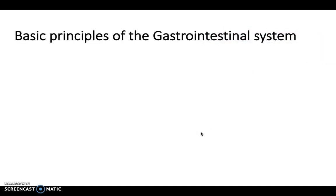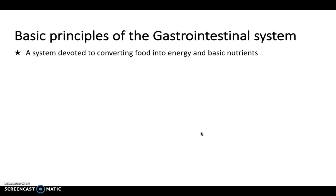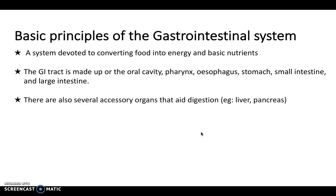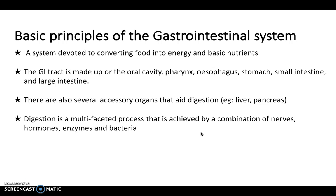Let's look at some of the basic principles of the GI system. The GI system is all about digestion — converting the food we eat into energy and basic nutrients. It's made up from the oral cavity at the top, through the pharynx, the esophagus, the stomach, and the small and large intestines. There are several accessory organs as well: the liver, pancreas, gallbladder, and so on. Digestion is a multifaceted process achieved by a combination of nerves, hormones, enzymes, and bacteria.